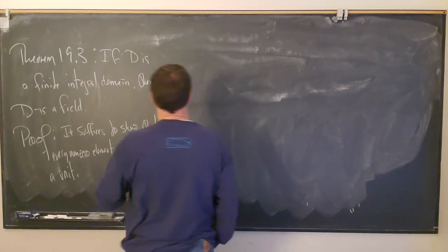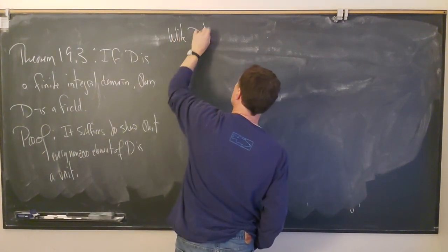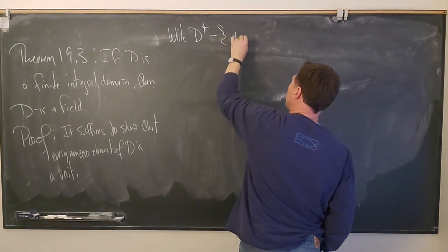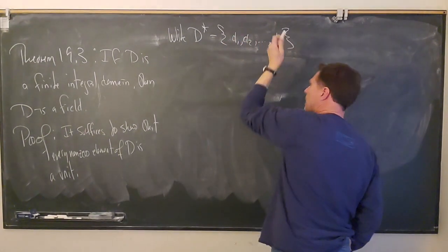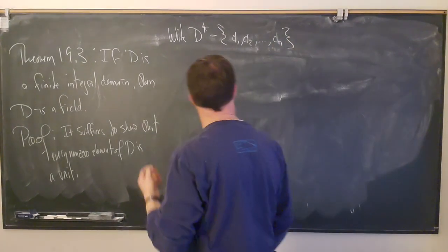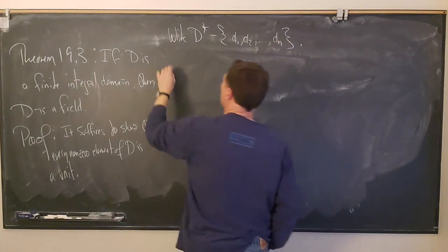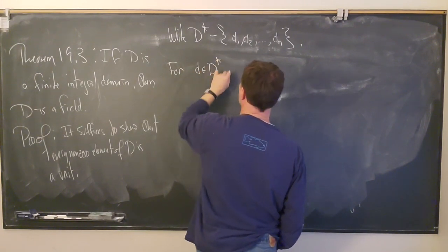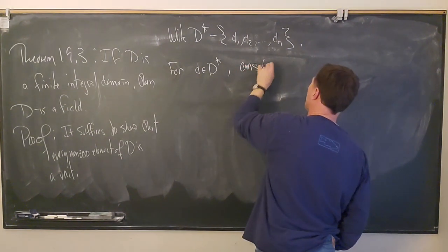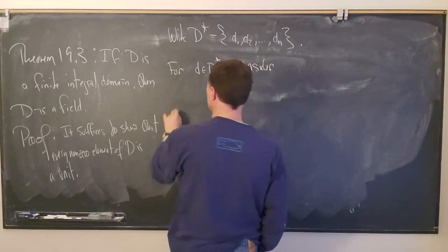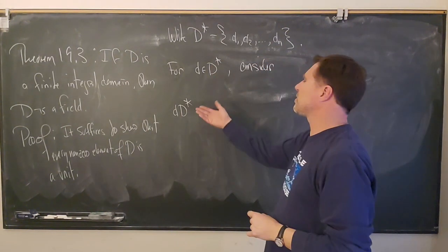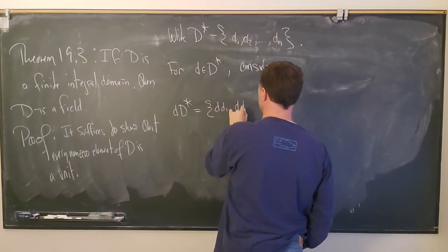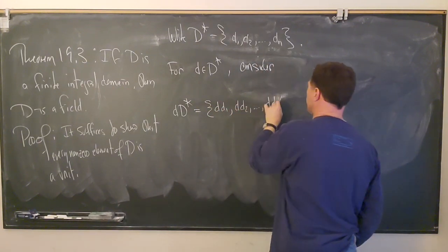So let's look at the non-zero elements. We write D*, the non-zero elements of D. Since it's finite, we can write it out as d_1, d_2, ..., d_n for some n. And let's pick some non-zero element — for some little d in D*, consider the set d·D*. That would mean {d·d_1, d·d_2, ..., d·d_n}.